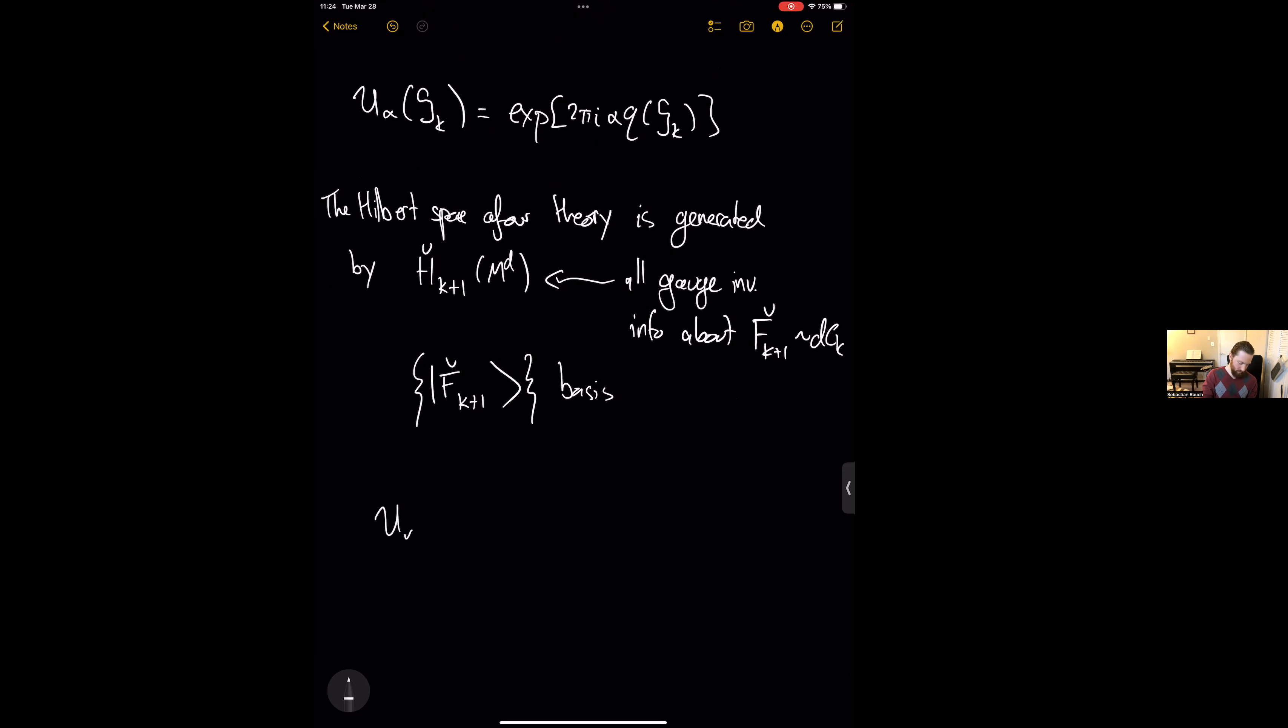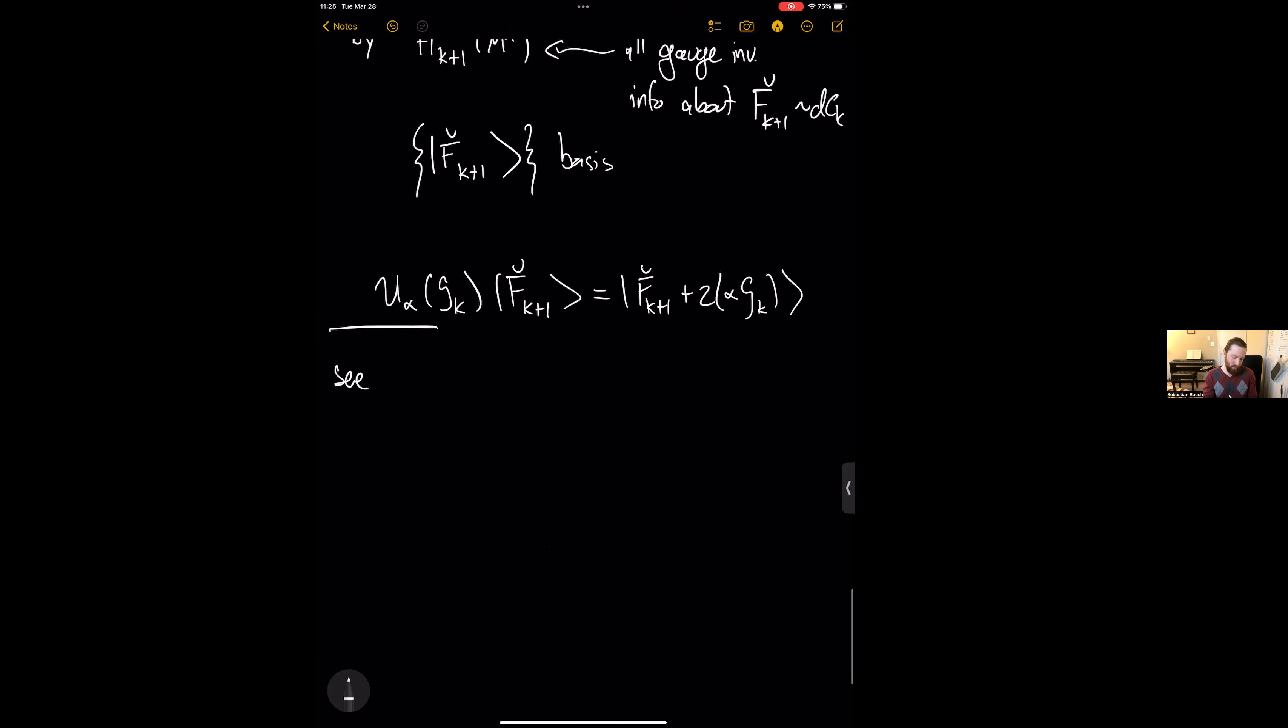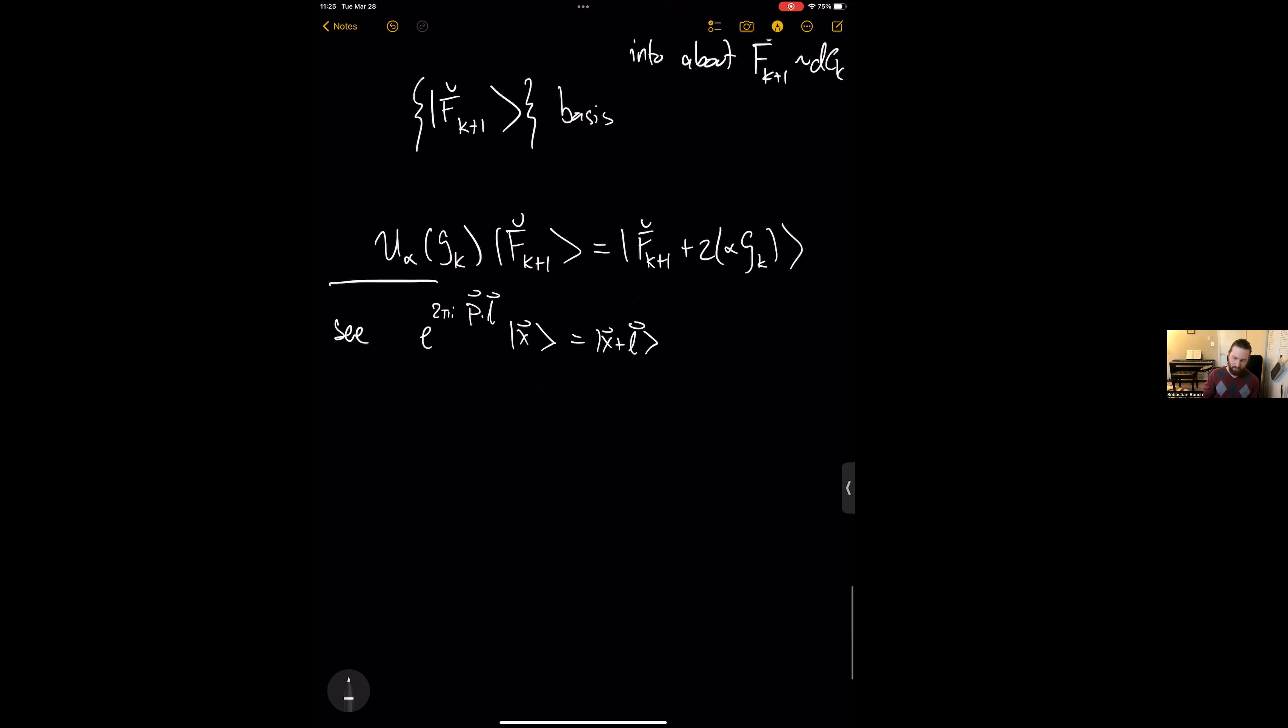And so then the final step here is to recognize that CK is canonically conjugate to star DCK because of how just derivative counting in the action. And so we can then directly compute that the action of this symmetry operator on this basis is given by translation. Where this iota map is the inclusion of K forms as flat connections into the K plus one cohomology. So this is exactly the usual like exponential of P dot L on a position state gives just translation. So it's the same exact canonical quantization relationship.